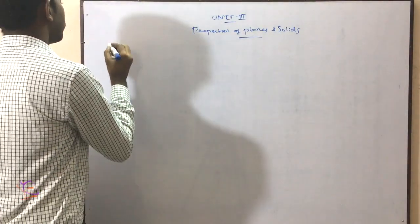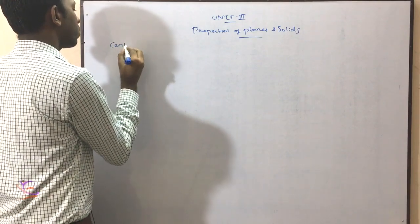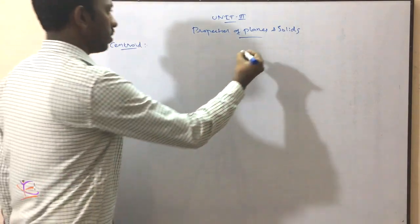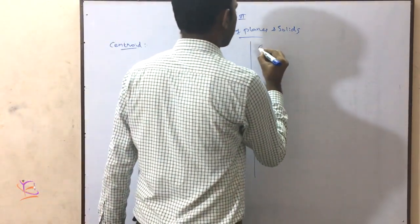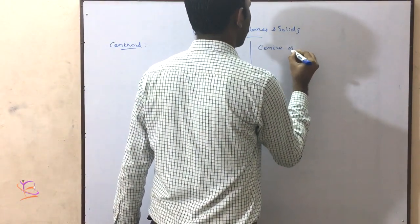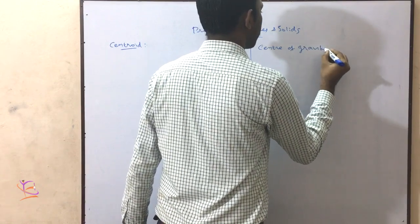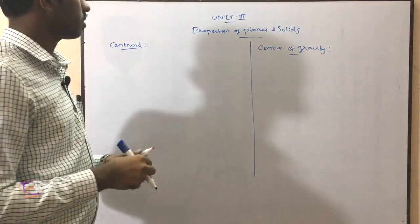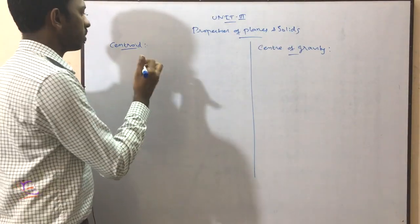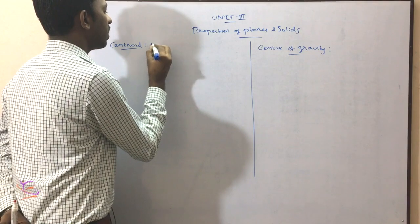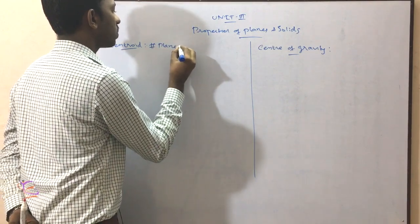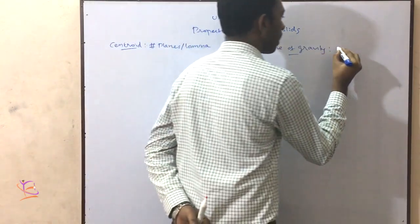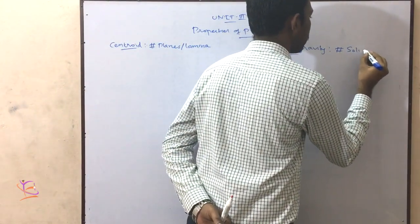Here we are going to discuss first about a term called centroid, and secondly we are going to discuss about centre of gravity. These two terms, centroid and centre of gravity, are more or less similar, but the centroid is specifically for planes or lamina, and the centre of gravity is specifically for solids.